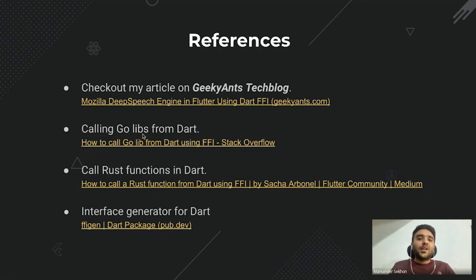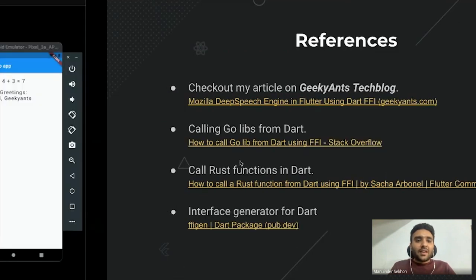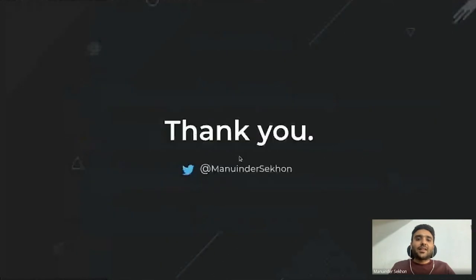Calling Go and Rust from Dart is a two-step process: first create a C interface from the Go or Rust code, then call that C interface in your Dart code. That's how we integrate Go and Rust libraries. And that's it — that's how we integrate a C library in our Flutter application.